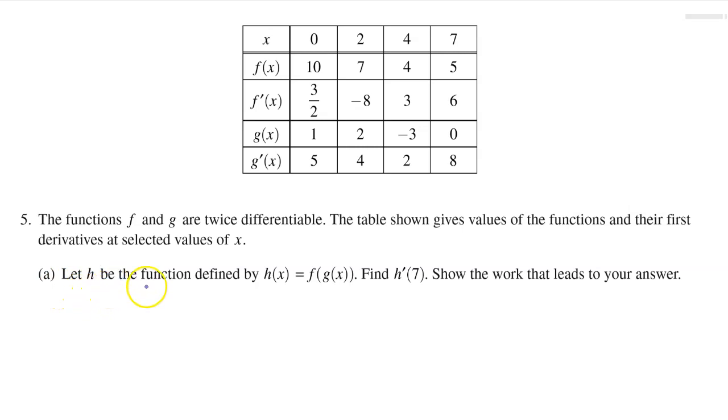Part a. Let h be the function defined by h of x equals f at g of x. Find h prime at 7. Show the work that leads to your answer.